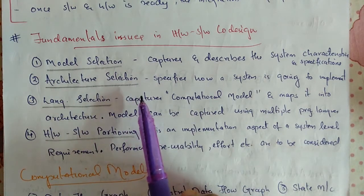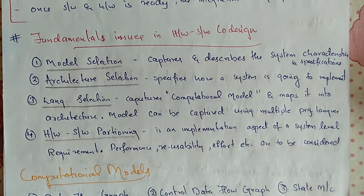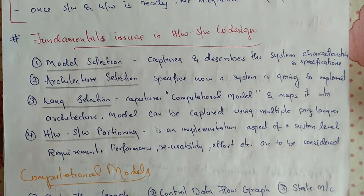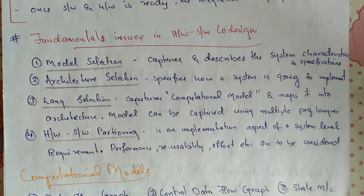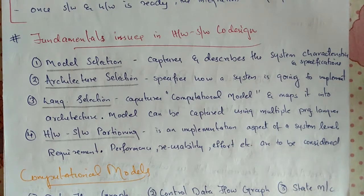Architecture selection specifies how a system is going to be implemented in terms of the number and types of different components and the interactions among them. The next is language selection — a programming language captures a computational model and maps it into the architecture. A model can be captured using multiple programming languages like C, C++, Java, etc. for software implementations, and languages like SystemC, Verilog, etc. are used for hardware implementation.